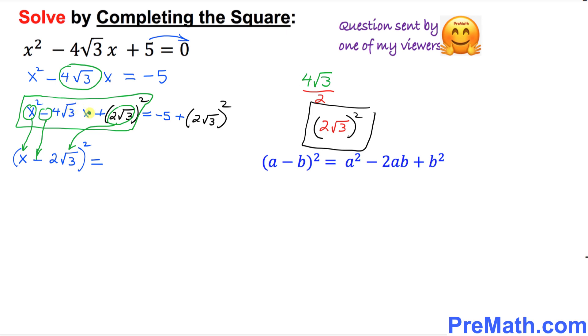Let's do the right hand side. Equals negative 5 plus, let's simplify this part. 2 square root of 3 squared could be written as 2 squared times square root of 3 squared. 2 squared is 4, and this square and square root undo each other. We got 3. 4 times 3 is 12. So I can write 12 right up here. So now finally we got x minus 2 square root of 3 squared equal to positive 7.